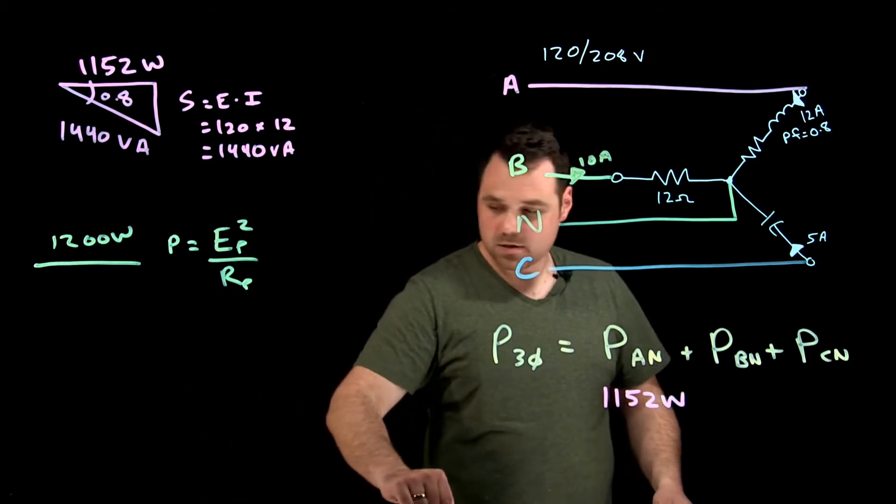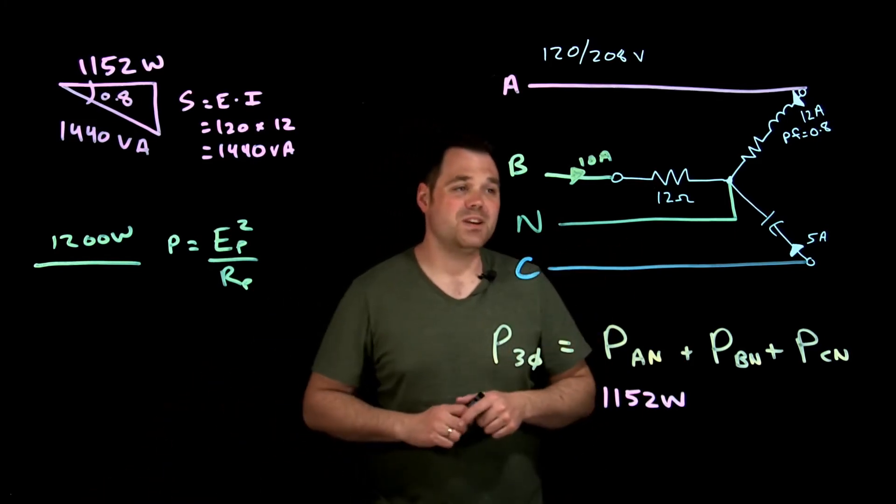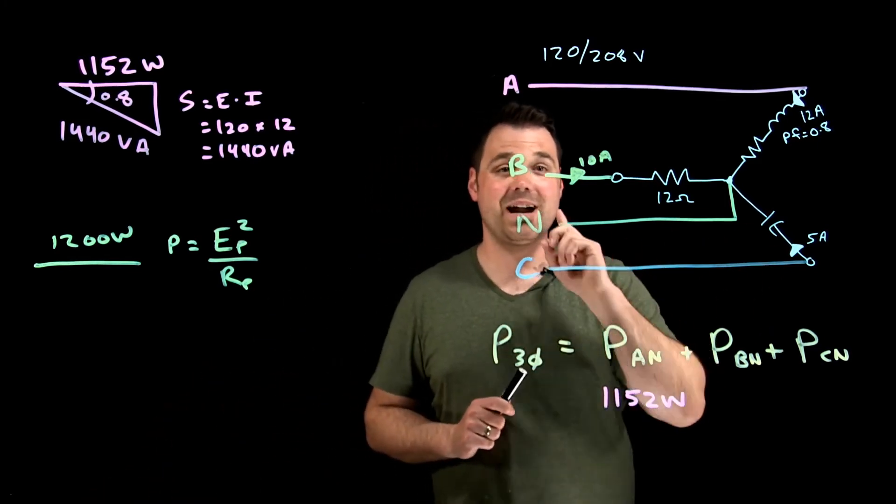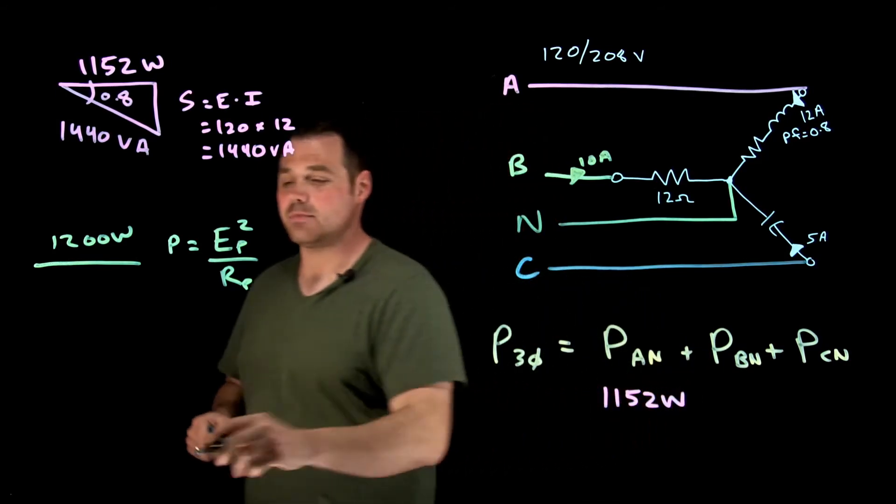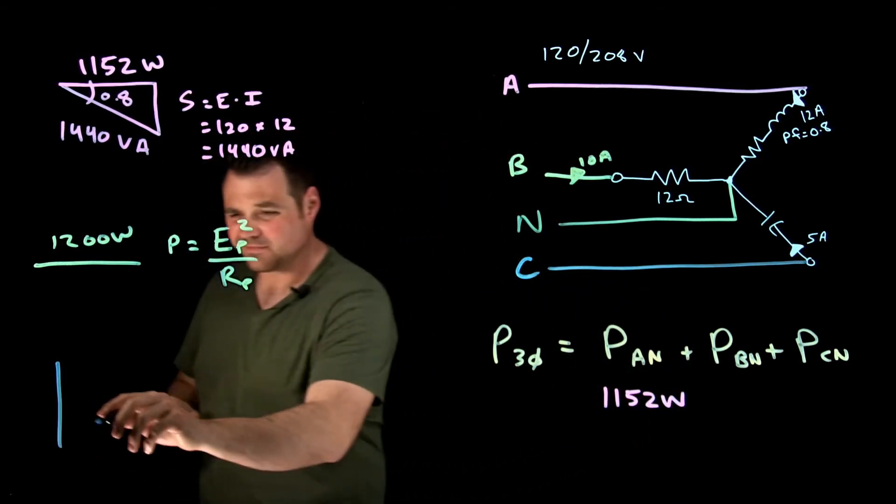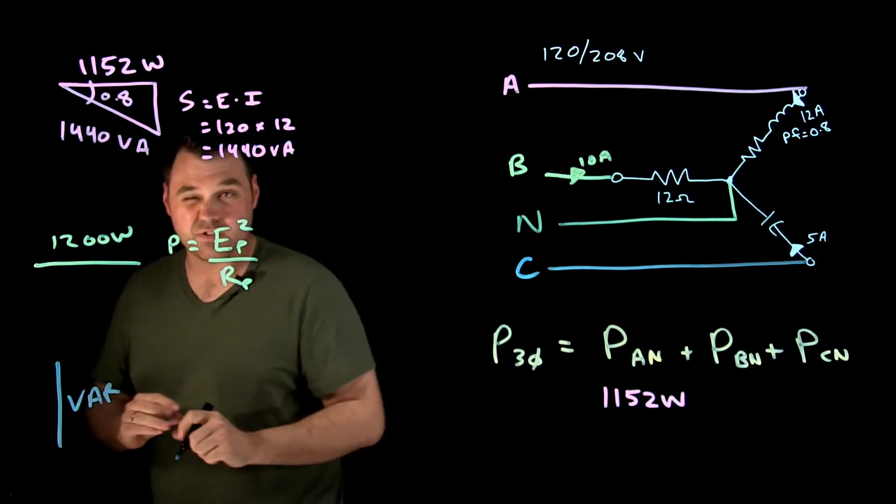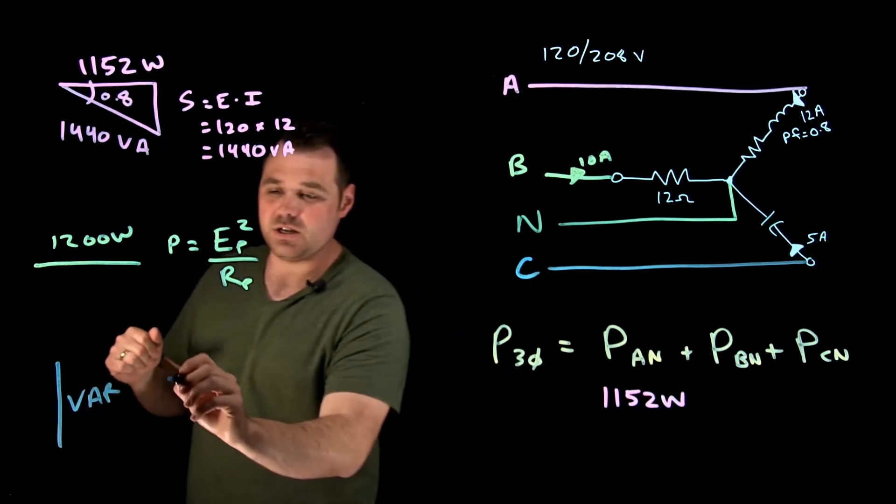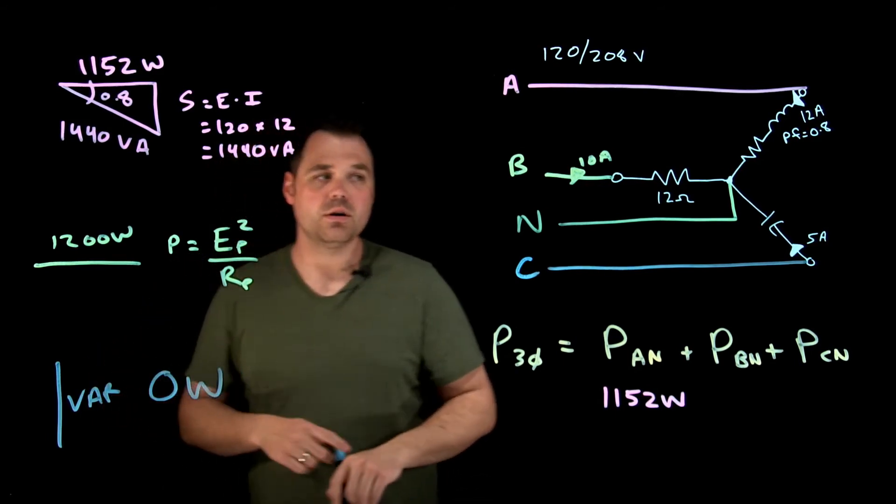The last one here is phase C. Phase C is a capacitor with five amps. Capacitors are all out-of-phase values, all vars, which means that in phase C, I would have zero watts.